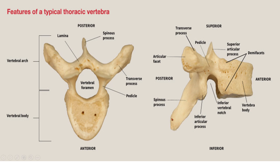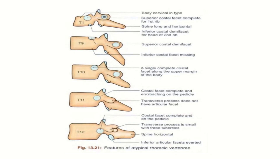The spine of thoracic vertebrae slopes obliquely downwards. In typical thoracic vertebrae (T2 to T8), there should be two demifacets on the body and one costal facet on the transverse process. These are the typical thoracic vertebrae, while T1, T9, T10, T11, and T12 are atypical. Just as in the ribs — where 3 to 9 are typical and 1st, 2nd, 10th, 11th, and 12th are atypical — T2 to T8 are typical thoracic vertebrae.